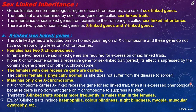Now, sex-linked inheritance. Genes located on the non-homologous region of sex chromosomes are involved in sex-linked inheritance. The traits determined by sex-linked genes are called sex-linked traits. Since these are present on the X and Y chromosomes, they are called sex-linked traits. The inheritance of sex-linked genes from parents to offspring is called sex-linked inheritance. There are two types: X-linked and Y-linked.